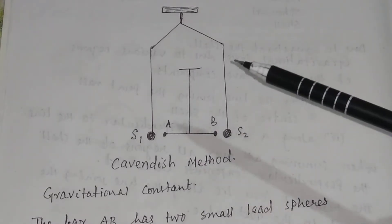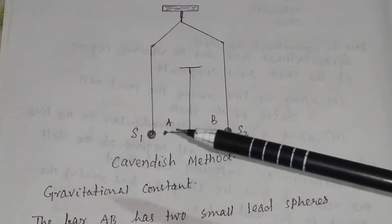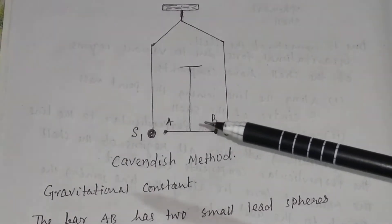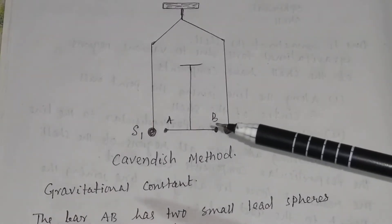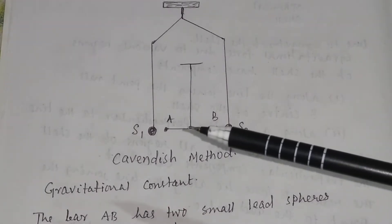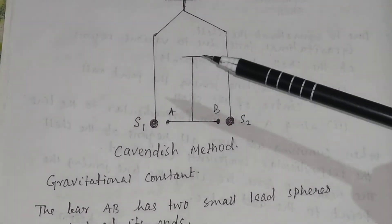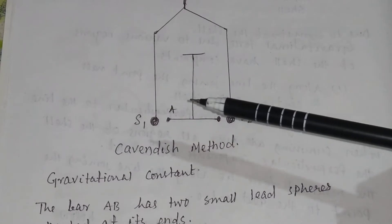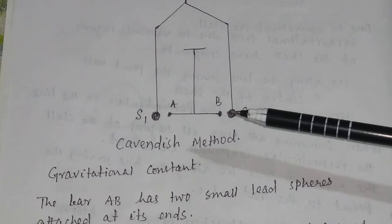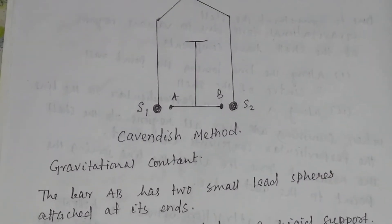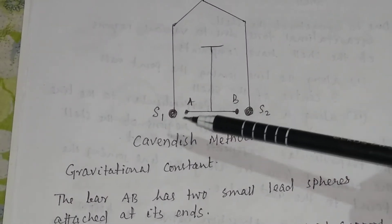This is a simple diagram of the Cavendish experiment. AB is a very light rod with two small spheres — small sphere A and small sphere B. This light rod is suspended from a rigid support. S1 and S2 are two large spheres, and they are kept on either side of masses A and B, as you can see in this figure.